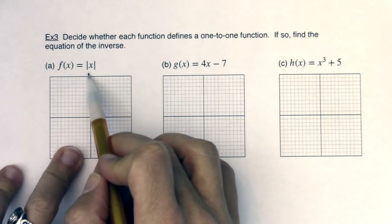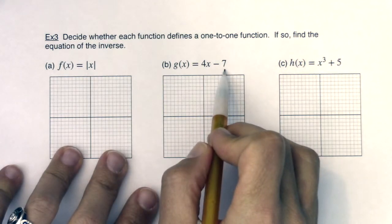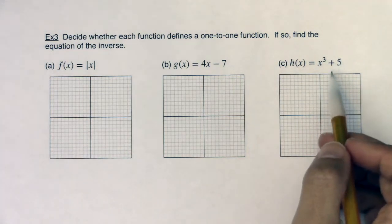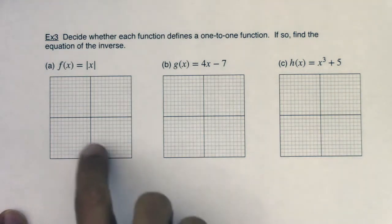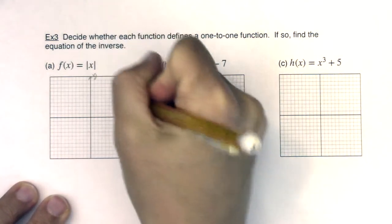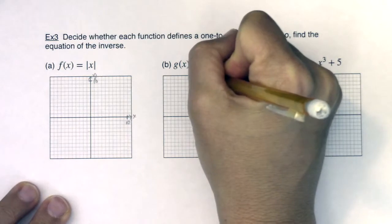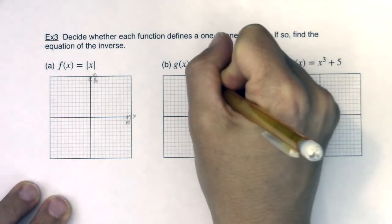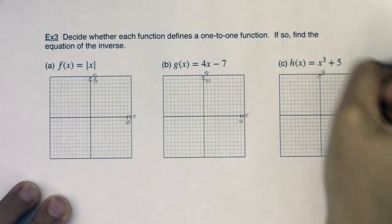We've graphed the absolute value of x plenty of times. This is a line with slope 4, y-intercept at (0, -7), and this is a cubic function. If I'm not sure how to graph this, I can use my calculator to help me. We're always going to have technology to assist us. So I'm going to graph these because they're the easier of the three to graph. I'm going to label and scale axes.